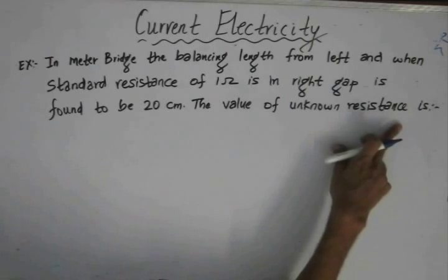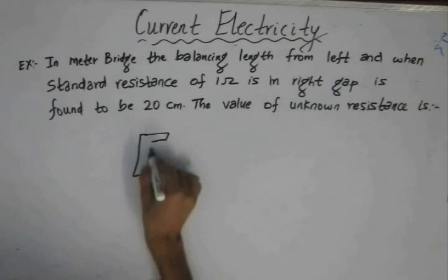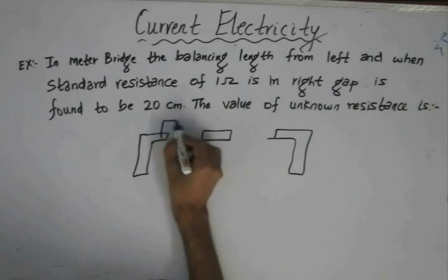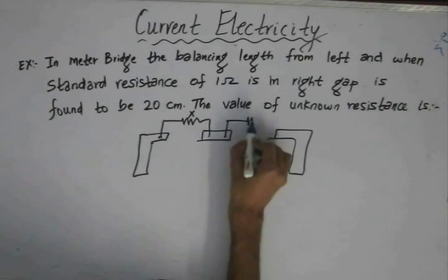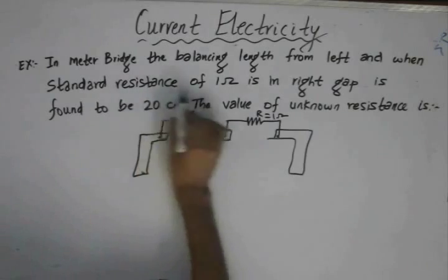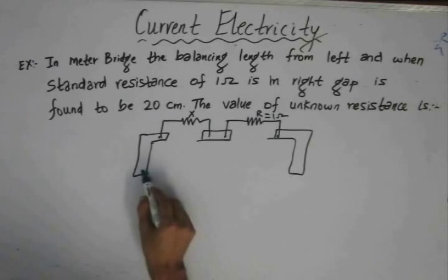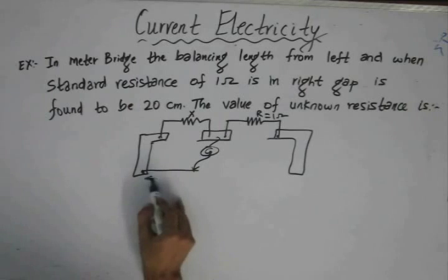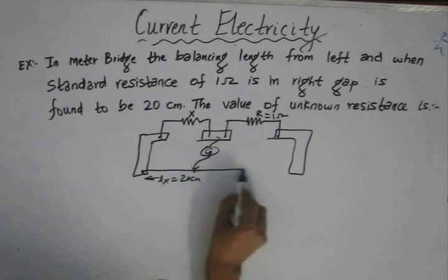We need to determine the value of the unknown resistance, which is present in the left gap of the meter bridge. If we draw a rough diagram of the meter bridge, on the left gap we have the unknown resistance whose value we have to determine, and in the right gap we have a standard resistance of one ohm. There is no deflection in the galvanometer for a balancing length of 20 centimeters.